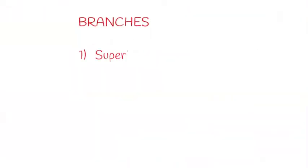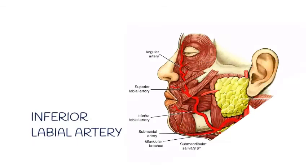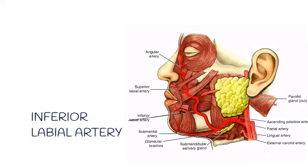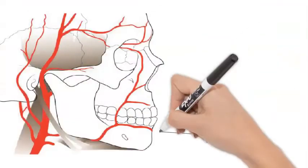The facial part contains four branches: superior labial, inferior labial, lateral nasal, and angular. The inferior labial artery arises near the angle of the mouth and supplies the labial glands, the mucous membrane, and the muscles of the lower lip.